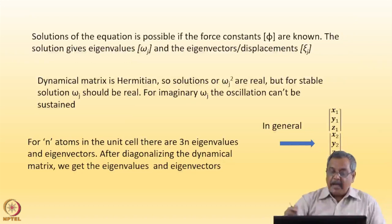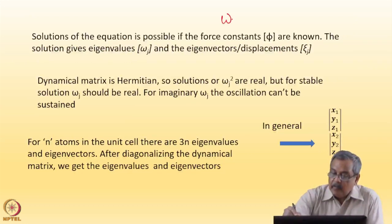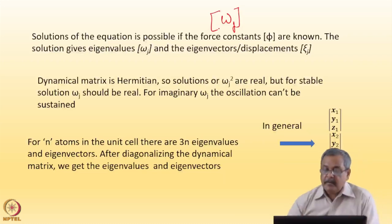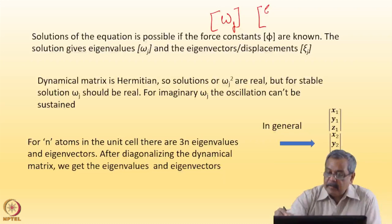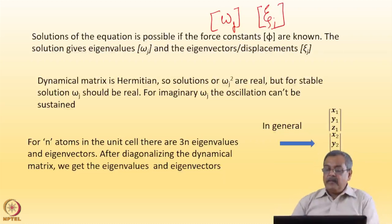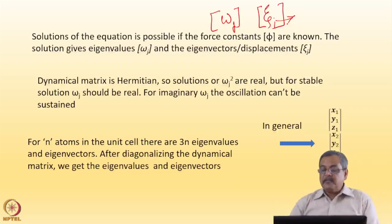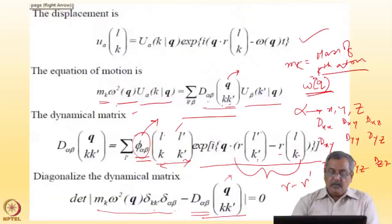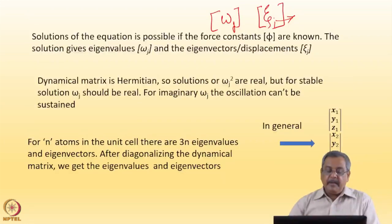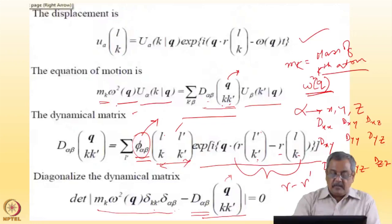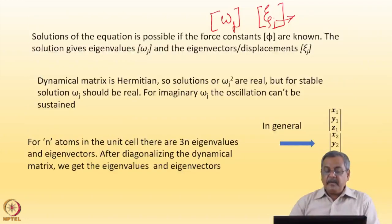The eigenvalues are ω_j — the set of eigenvalues — and the eigenvectors I may call ξ_j. When I say ω_j, the eigenvalues give the energy associated with a particular phonon, and for that, ξ_j gives the displacement pattern. The dynamical matrix is a Hermitian matrix because the forces are real. So its solutions in terms of ω² should be real, meaning ω_j² is real.